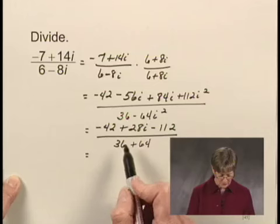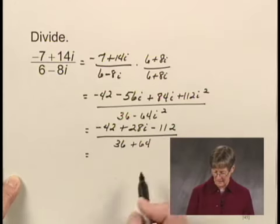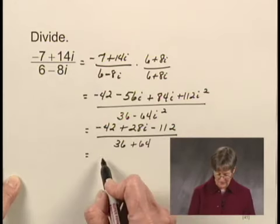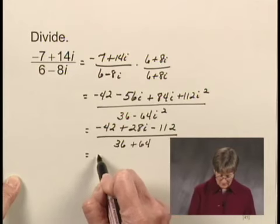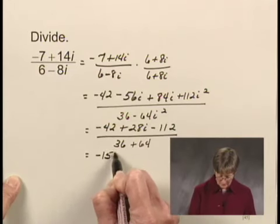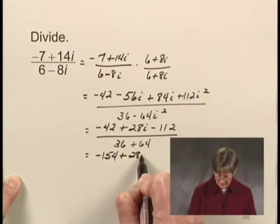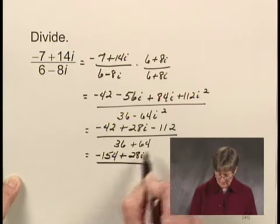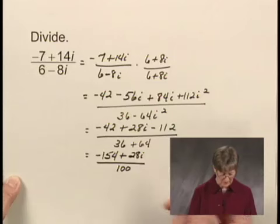Now in the numerator, I can add negative 42 and negative 112, and I would get negative 154. So I have negative 154 plus 28i. And 36 plus 64 is 100.